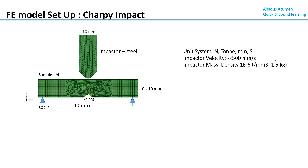You can do some hand calculations in the background to understand what the initial impact energy is. The inputs are 1.5 kg approximate mass and the impact velocity, which together give a kinetic energy. That kinetic energy is the initial impact energy for this aluminum sample toughness evaluation.